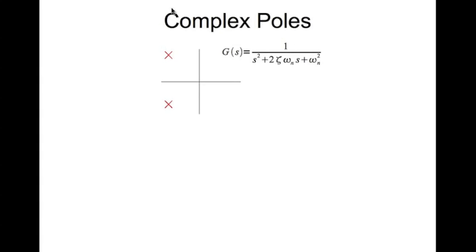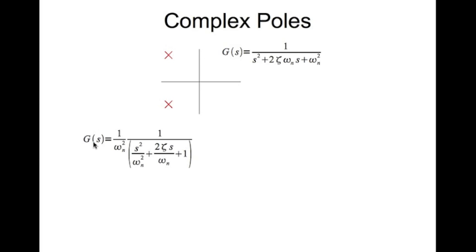Continuing with the mechanics of drawing Bode plots by hand, we are going to look at complex poles and zeros. This is the transfer function for a complex pole pair, and this is how it looks in the complex plane. We bring ω₁ divided by ωₙ squared outside, and we call this portion of the transfer function g-dash.